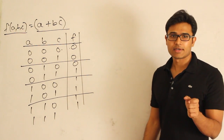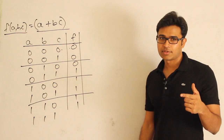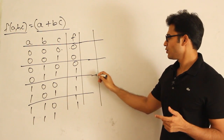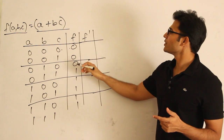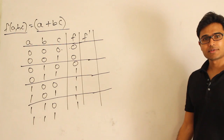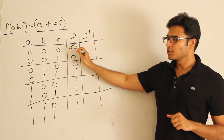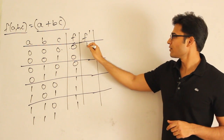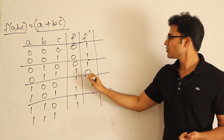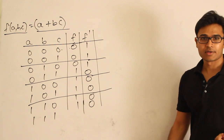Once we have seen that this is how the function is defined, we could do various things on it. One thing is, if you know the values of the function, then you could define the complement of the function. The complement means: whenever this function is saying 0, the complement will say 1; and whenever this function is saying 1, the complement will say 0. That is how you define the complement.